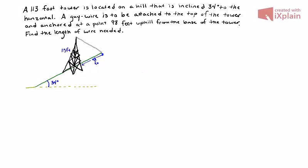Hi everyone, this video is for section 8.1, non-right triangles: laws of sines and cosines. We're going to take a look at an application problem. A 113-foot tower is located on a hill that is inclined 34 degrees to the horizontal. A guy wire is to be attached to the top of the tower and anchored at a point 98 feet uphill from the base of the tower. Find the length of the wire needed.